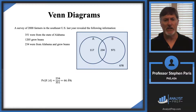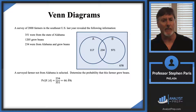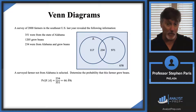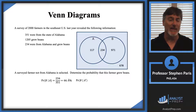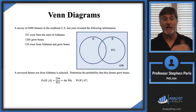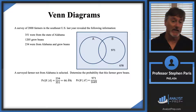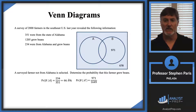So now let me change it up a little bit. This time, instead of the surveyed farmer being from Alabama, let's say the surveyed farmer is not from Alabama. What is the probability that the farmer grew beans? So now I'm looking for the probability of B given A complement. Given A complement means I ignore everything in A — I'm only looking at the complement of A. That's the 971 plus the 678, which goes in the denominator. Out of those, how many are in set B? That's 971. So I get 971 divided by 1,649, and I get 58.9% for that.